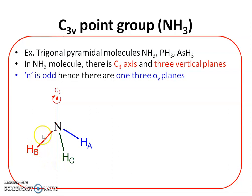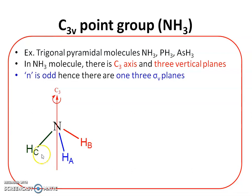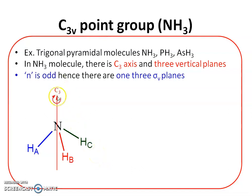For the C3² operation — another 120° rotation — HB takes the position of HA, HA takes the position of HC, and HC takes the position of HB. C3³ (the third 120° rotation) gives an identical structure and is therefore the identity operation. These three rotations confirm the C3 principal axis.